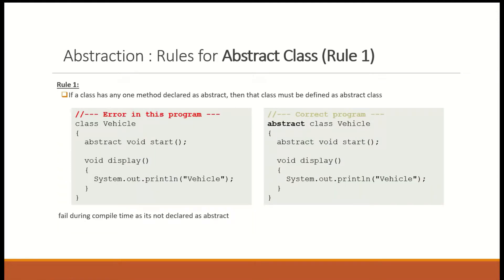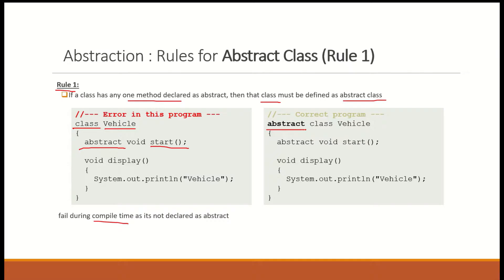When will you get an error? Let's say you have a class Vehicle but you didn't write 'abstract' — just 'class Vehicle', meaning it is a concrete class. When it is a concrete class, all methods should be concrete. But if you have an abstract method declared inside it, it will raise a compilation error because a concrete class cannot have an abstract method. Rule number one: if a class has a method declared abstract, then that class must be declared as an abstract class. The solution is to put the keyword abstract in front of the class.